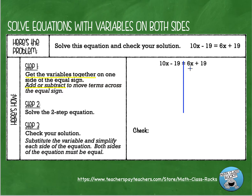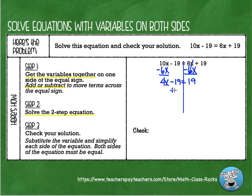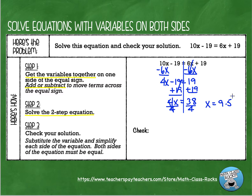I prefer my variables on the left side, so I usually cancel whatever's on the right. Since this is a positive 6x, I subtract 6x on each side. 10x minus 6x gives me 4x minus 19, and on the right side I bring down my 19. Next, we solve the two-step equation: add 19 on each side, leaving 4x equals 38. Then divide by 4, giving x equals 9.5. It's perfectly normal to end up with a decimal answer.